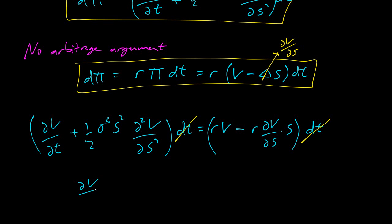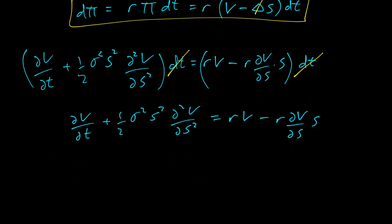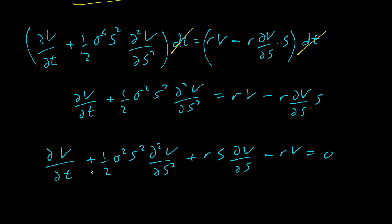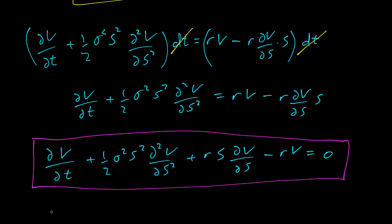Now I'll rewrite this. ∂V/∂t plus half σ² S² ∂²V/∂S² equals rV minus rS ∂V/∂S. And now I'm just going to move everything to the left-hand side. Nothing too exciting. ∂V/∂t plus half σ² S² ∂²V/∂S² plus rS ∂V/∂S minus rV equals zero. So I just moved everything to the left. And look at that, we have the Black-Scholes equation. Here it is. Black-Scholes. Pretty cool.